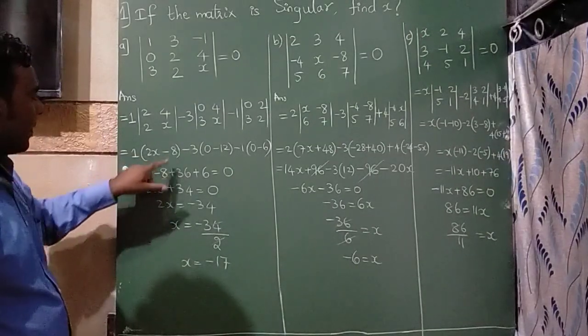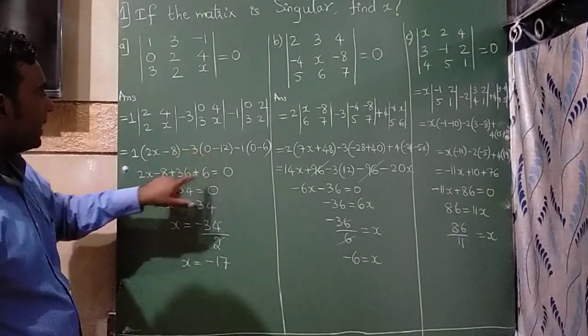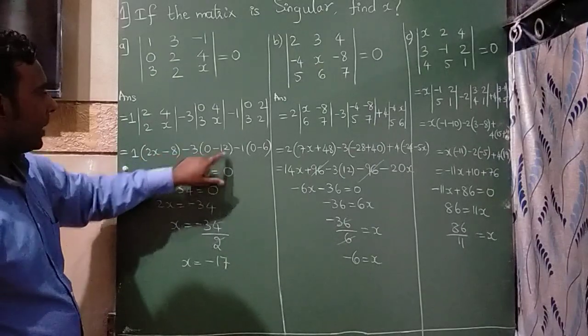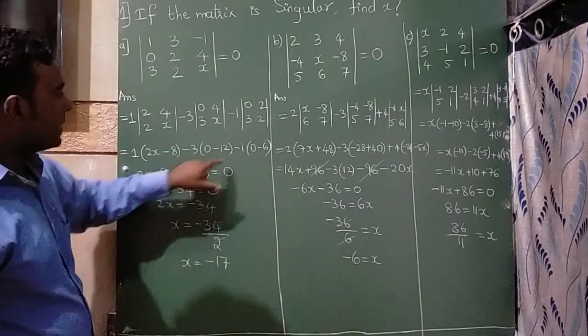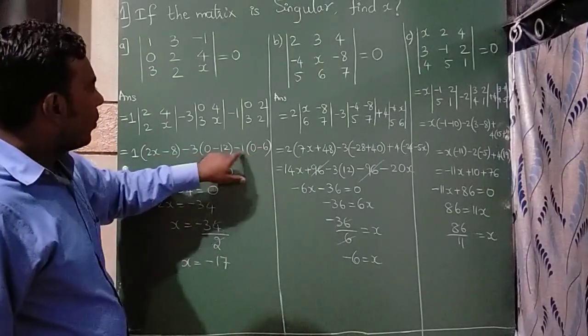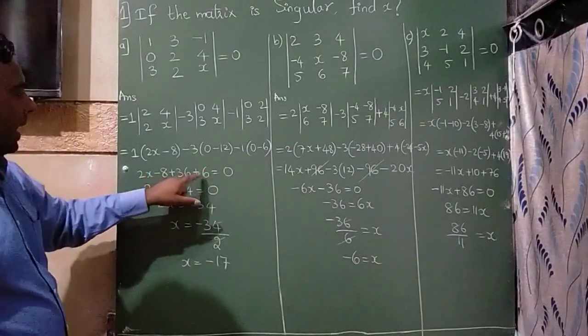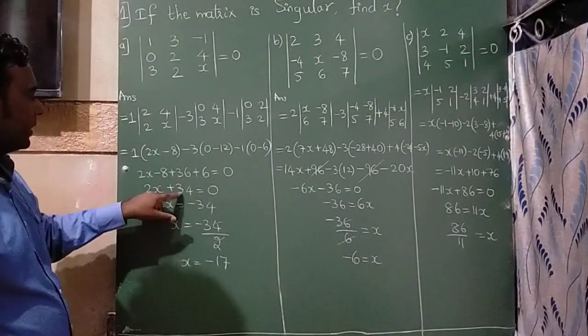Now, 1 times 2x is 2x minus 8. Minus times minus is plus 3 times 12s are 36. Plus, minus times minus is plus 1 times 6s are 6. If you add and subtract this, you will get 34.